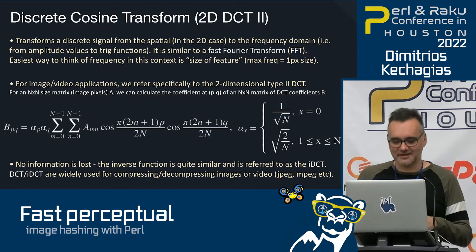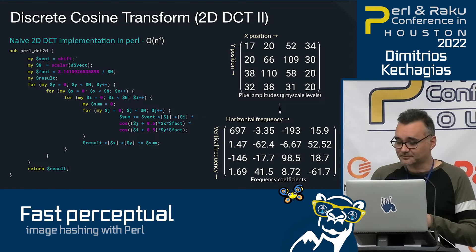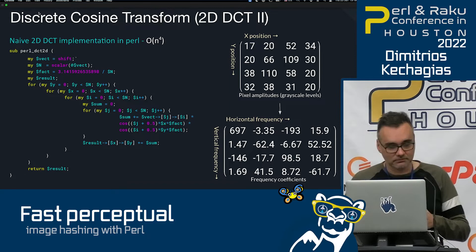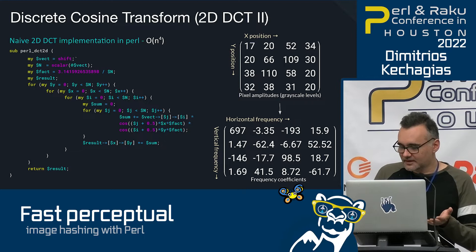Here's the naive implementation in Perl: four nested for loops, making it O(n^4) in Big-O notation. You give it a table of integers with pixel amplitudes from 0 to 255 and get back frequency coefficients as real numbers.